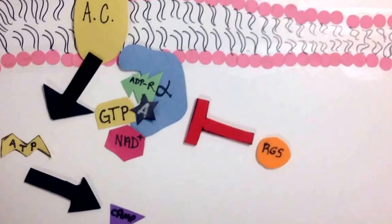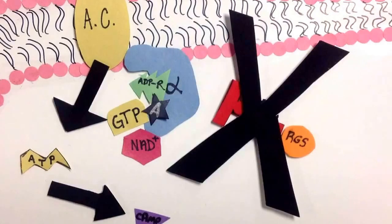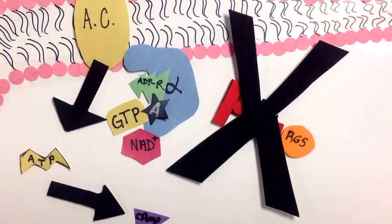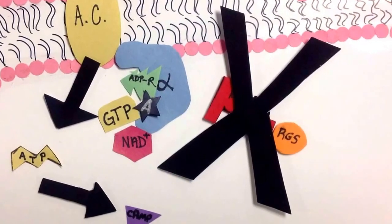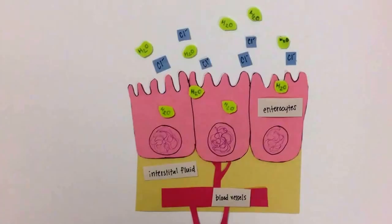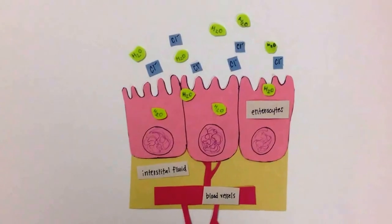The increased concentration of cyclic AMP inhibits the function of the regulator of G protein signaling, otherwise known as RGS, which causes a constant production of cyclic AMP. This causes chloride ions, along with H2O, to constantly flow out of the cell.